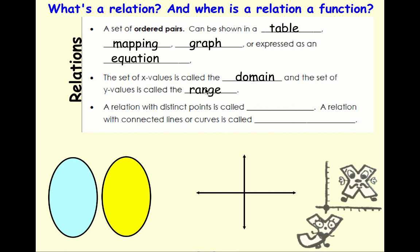When we're looking at a relation with distinct points, in other words they're not all connected, it's called discrete, but if it has connected lines or curves it's called continuous.